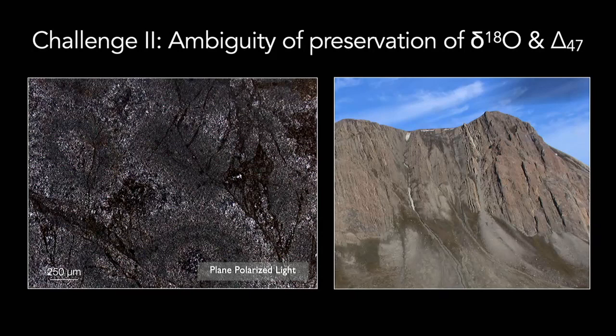The second challenge is that as we go further back in time, there's also ambiguity in the preservation of these isotopic systems. For oxygen isotopic compositions of carbonate, they're sensitive to all of the alteration processes during burial, including dissolution, re-precipitation, and dolomitization. The clumped isotope thermometer is sensitive to the temperature that the rock sits at over time. If you bury your carbonate deeply and it sits at a hot temperature, you will undergo breaking of those clumped bonds and diffusion, resetting that initial temperature to something hotter during burial. These two components of the record are ones you have to grapple with.